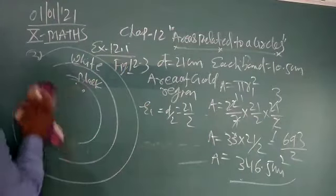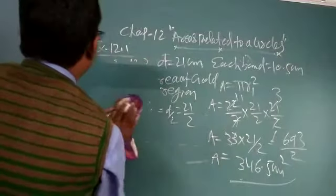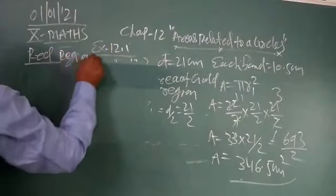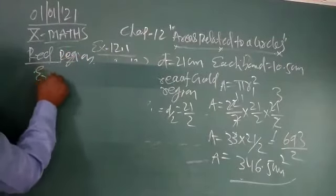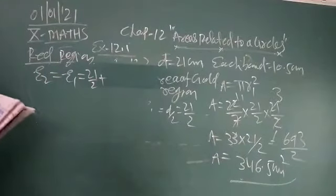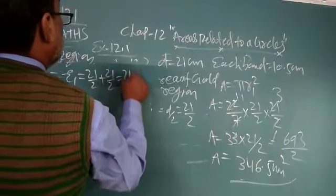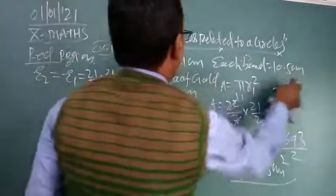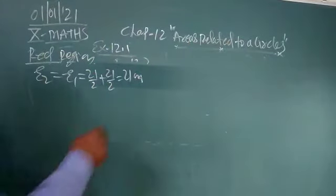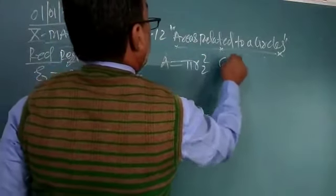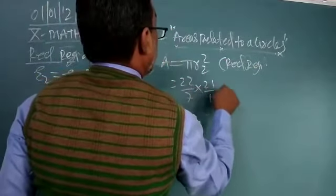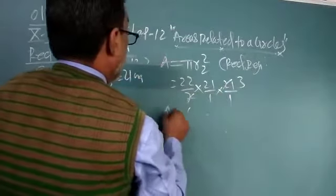Now area of the red region. Radius is equal to first radius 21 upon 2 plus the band is 10.5, so 21 centimeter. What is the area? Area is equal to pi r2 square. This is for red region. 22 upon 7, r means 21, 21, so A equal to 63 multiply by 22. A means 1386 square centimeter.